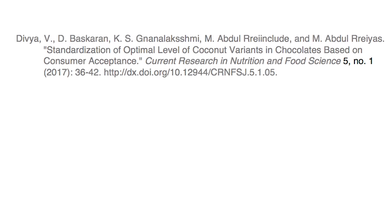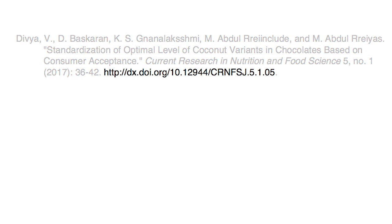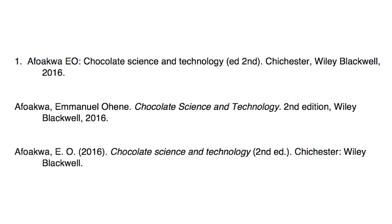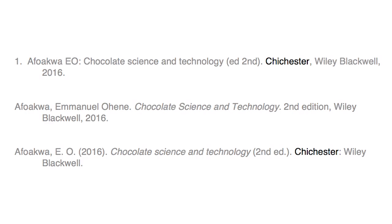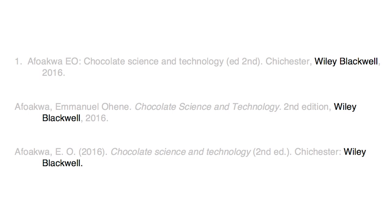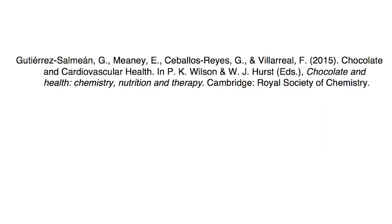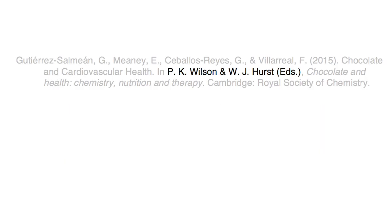Many journals and books are accessed electronically, so most referencing styles require the URL or the DOI, or the name of the database from which you downloaded the article or the book. Some details that are often needed for books but not for journals are the place of publication, the publisher, and the editor, if the book is an edited publication.